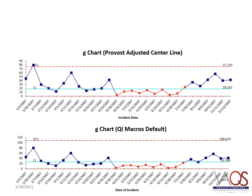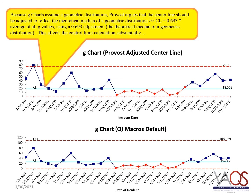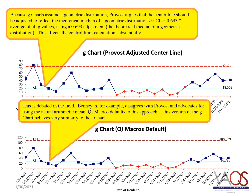It is important to note that there is variation and debate regarding the calculations of G-charts. In the upper chart is the IHI approach shown in the Provost textbook; in the lower chart is the default QI macros approach, which is derived from Lean Six Sigma. In the Provost approach, G-charts are assumed to follow a geometric distribution, and Provost argues that the center line should be adjusted to reflect the theoretical median of a geometric distribution, which affects the control limit calculation substantially. Others, such as Bennion and Lean Six Sigma approaches, argue that the actual arithmetic mean should be used for the central line. QI macros defaults to this approach but can be adjusted as needed.